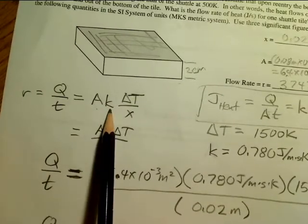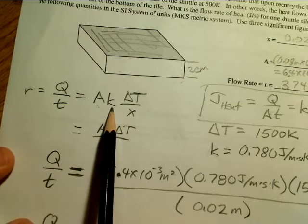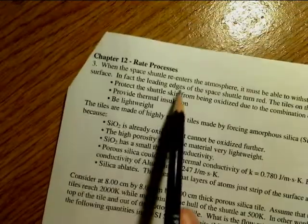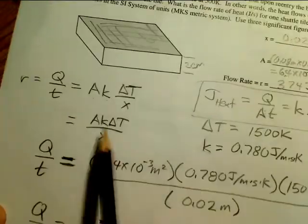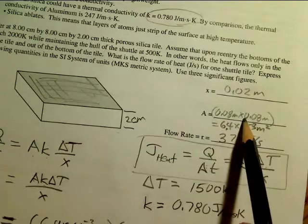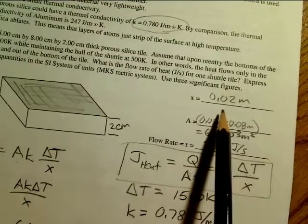times the thermal conductivity of the silicon material, silicon dioxide material used in the space shuttle. And it looks like the thermal conductivity is given right there. So that's K. We have area from up here, and X is also up here.